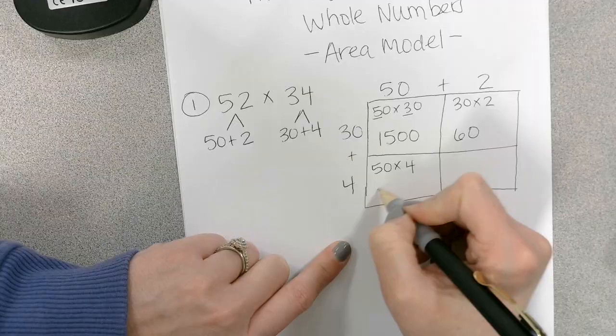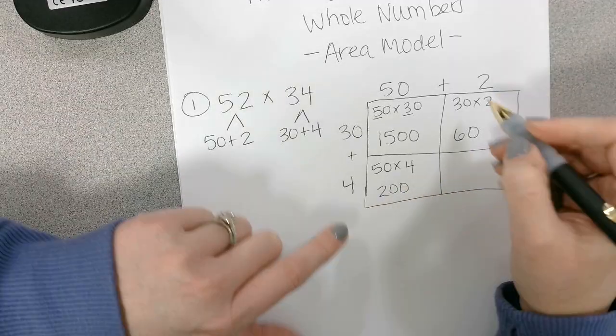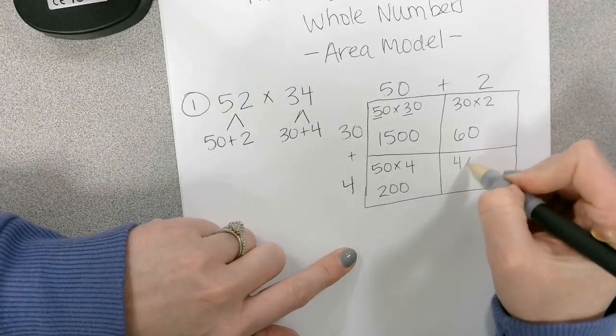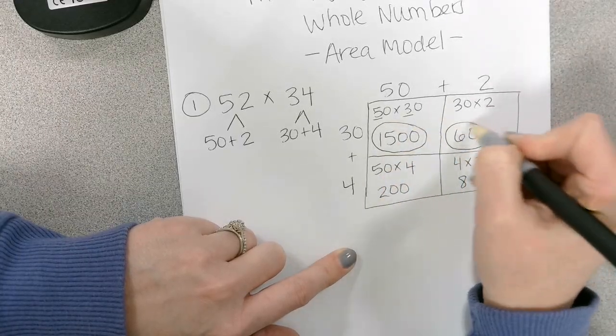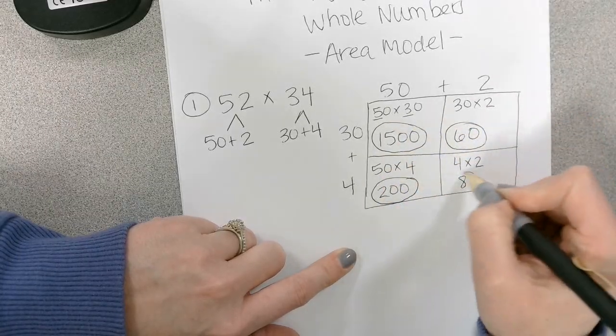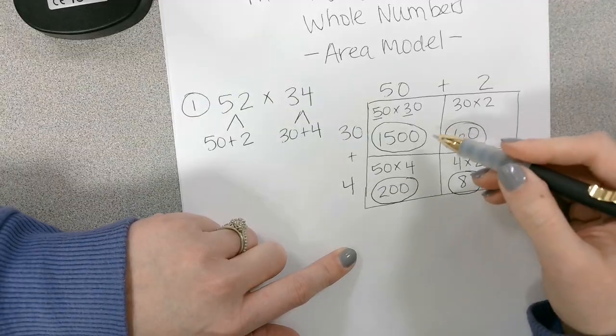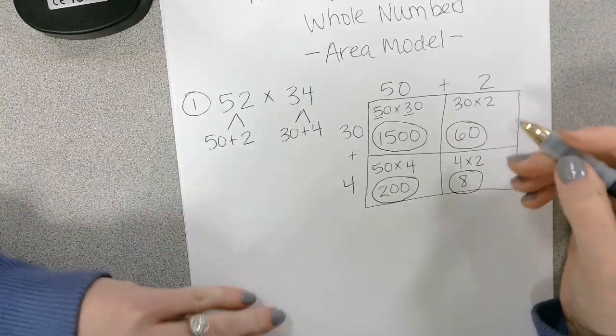And then here we have 50 times 4. 5 times 4 is 20, and then we drop a zero, and 4 times 2, which we know is 8. So all of these answers in these little squares are called partial products because they are part of the final product.